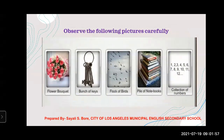If you will see the screen, I have shown you some pictures. First, there is a flower bouquet, then a bunch of keys, then a flock of birds, then a pile of notebooks, then a collection of numbers. If you observe these pictures carefully, some collective noun concepts are used. In the first picture, 'bouquet' is an example of a collective noun. Second, 'bunch' of keys — when keys are kept together, the collective noun used is 'bunch.' In the third picture, 'flock' of birds — flock is a collective noun.